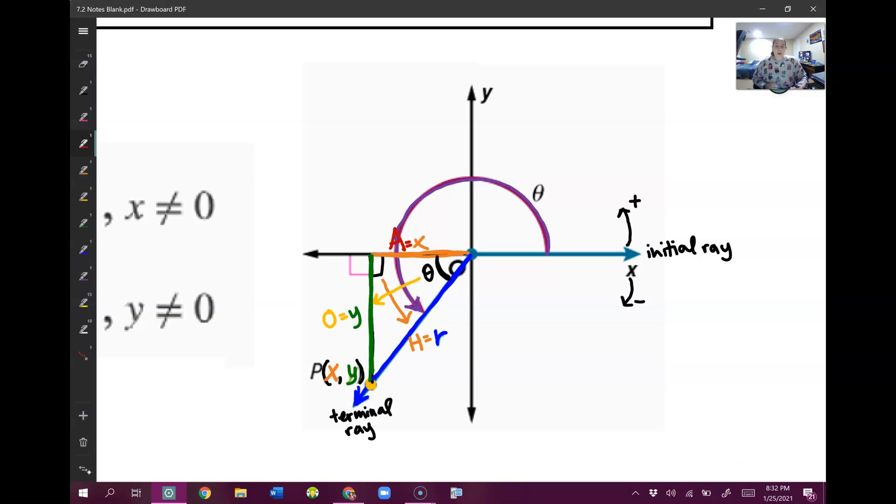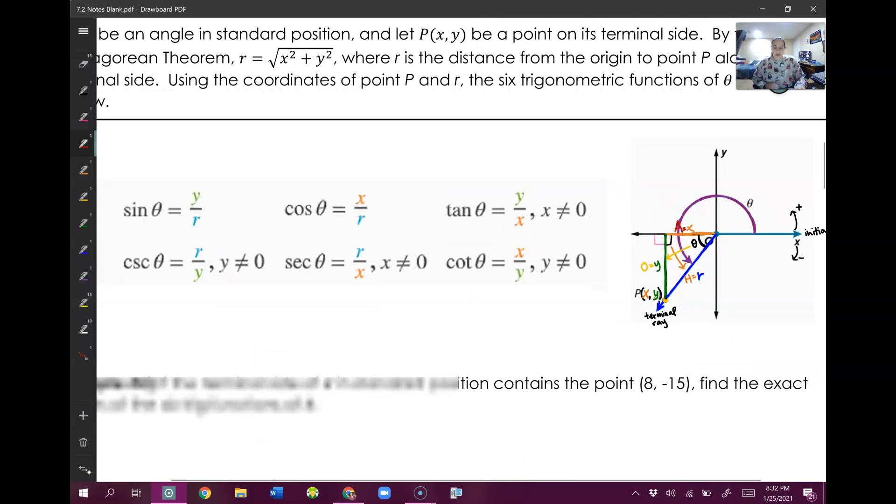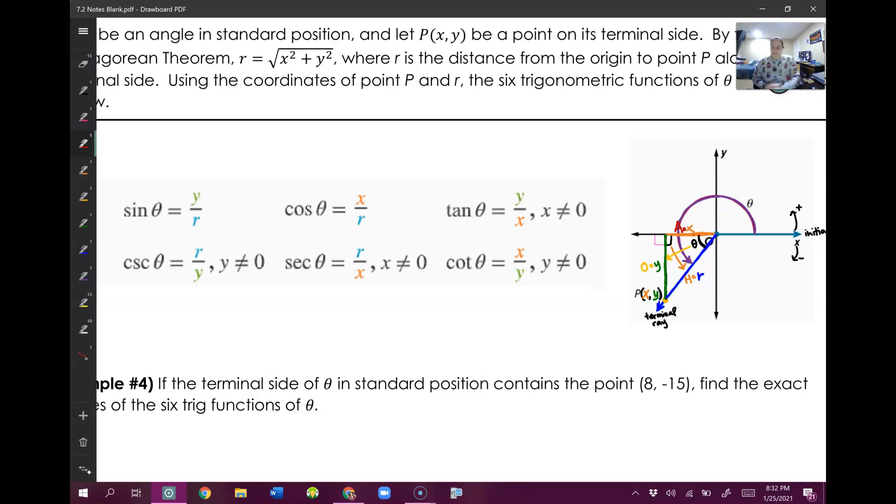So if I want to do my sine, cosine, and tangent using this, you can start to see these rules. So sine, remember SOH CAH TOA is opposite over hypotenuse. Well, if I look here at my triangle, my opposite side is my Y side.